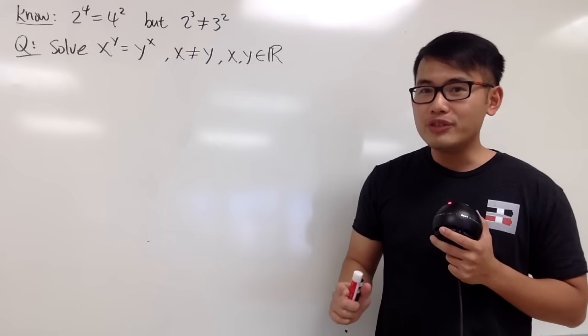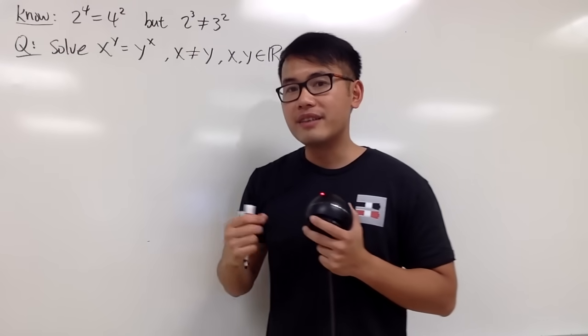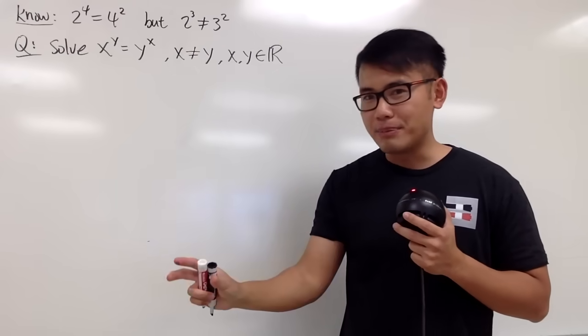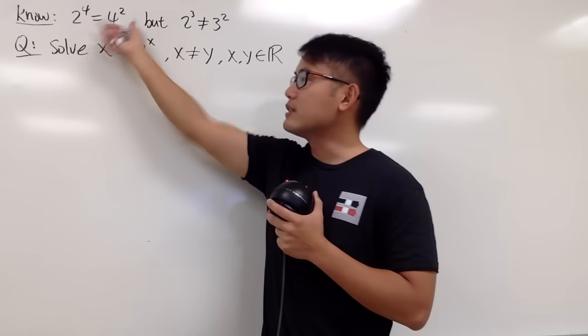And in this situation, we say that the base and the exponent, they commute because you can just switch the base and the exponent, and they are still equal to each other.